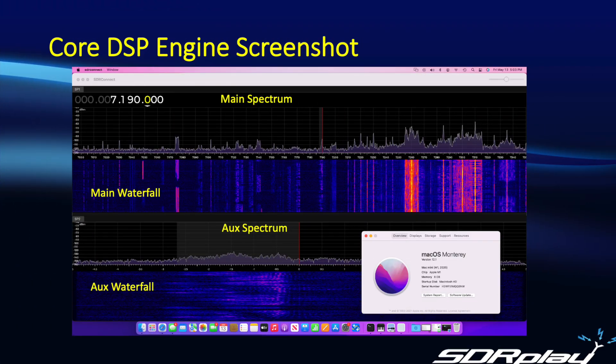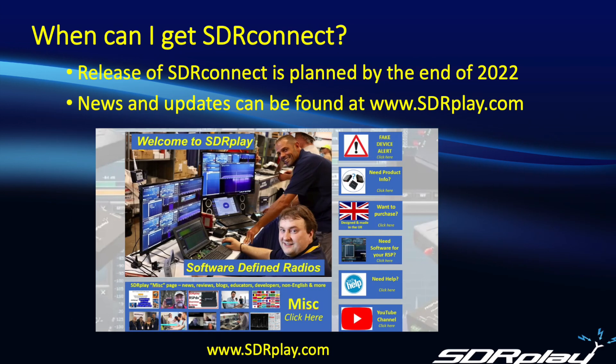To recap, what we've shown here is the core DSP engine of SDR Connect running on a Mac. In addition, we've also demonstrated networking capabilities by being connected to a remote RSP located in the UK. The big question is: when can you get hold of SDR Connect? We're on track for a release by the end of this year, and we're rushing to get it out to you as soon as possible. I'm sure you're going to be as excited to get your hands on it as we are in developing it. For continuous news updates, visit our website at www.sdrplay.com.